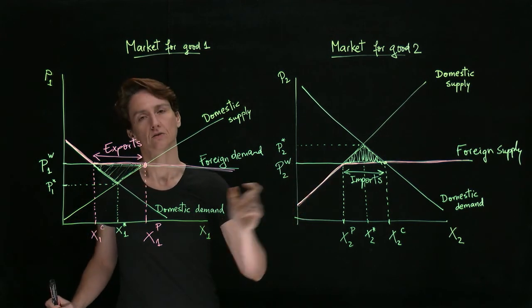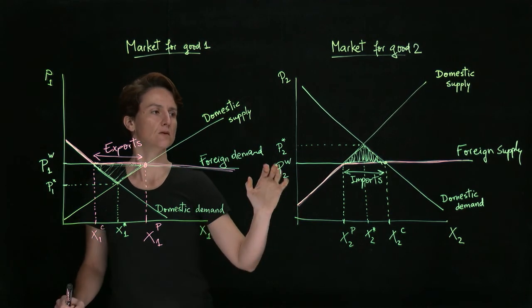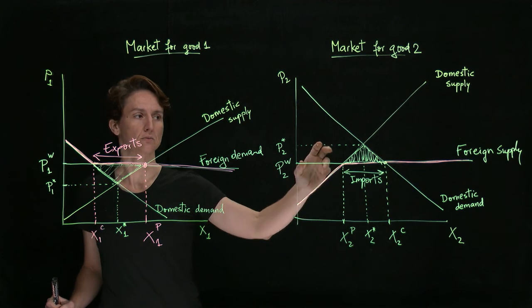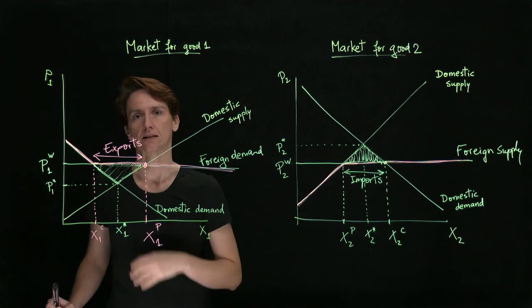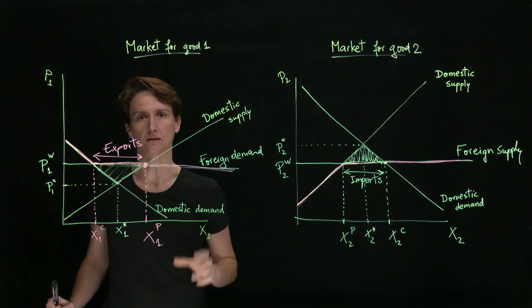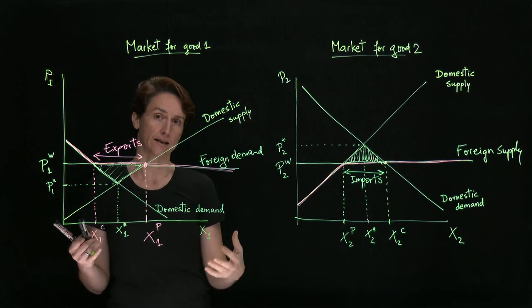And so one thing you could see right away is that even though one side of the market is hurt in both cases, here domestic producers are hurt, here domestic consumers are hurt, the side that benefits, benefits by a greater amount than the losses of the side that loses. There's a net gain.